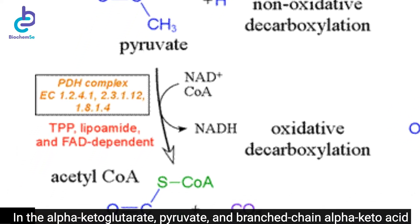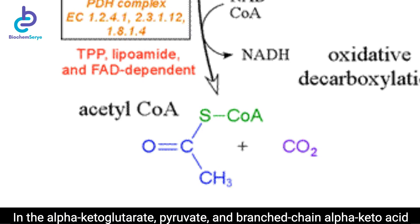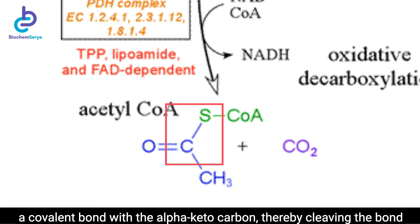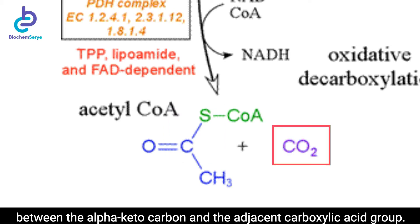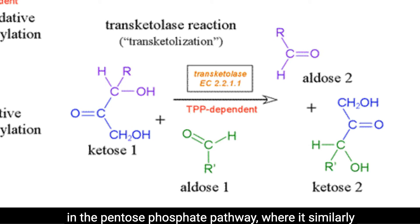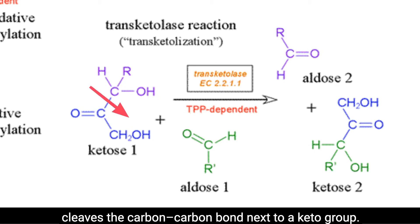The general function of thiamine pyrophosphate is the cleavage of a carbon-carbon bond next to a keto group. In the alpha-ketoglutarate, pyruvate, and branched-chain alpha-keto acid dehydrogenase complexes, the functional carbon on the thiazole ring forms a covalent bond with the alpha-keto carbon, thereby cleaving the bond between the alpha-keto carbon and the adjacent carboxylic acid group. Thiamine pyrophosphate is also a coenzyme for transketolase in the pentose phosphate pathway, where it similarly cleaves the carbon-carbon bond next to a keto group.